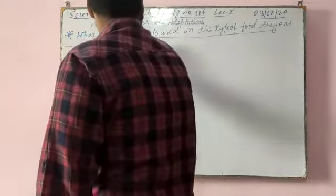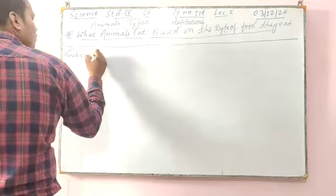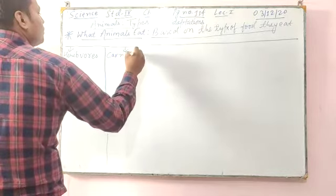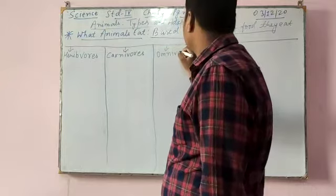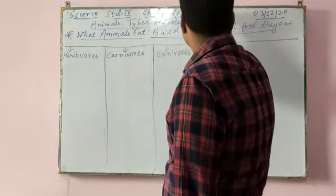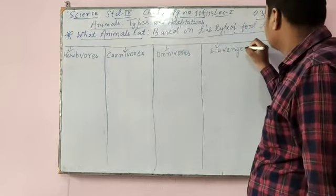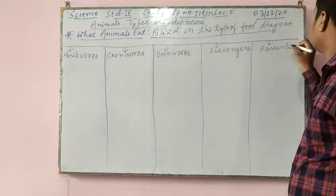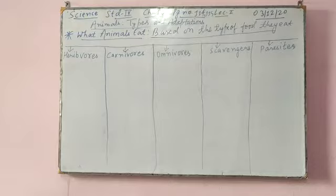So the five groups are: first, herbivores; second, carnivores; third, omnivores; fourth, scavengers; and the last one is parasites. I hope whatever I am writing is visible to you and whatever I am speaking is audible to you.